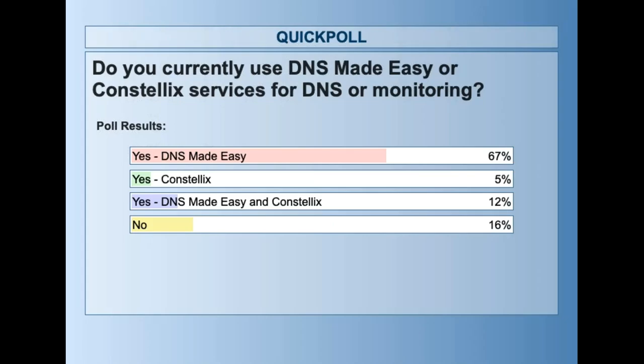Let me close the poll and share the results. We have 67% on DNS Made Easy, 5% on Constellix, 12% are using both, and there's 16% using none — great combination. DNS Made Easy is currently serving over 40,000 different organizations and over a million domain names. Constellix is catching up in queries but is much smaller at the organization level. Welcome to those who don't use either, and we hope to have you join the family soon.